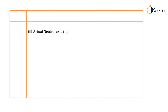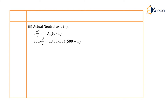Now moving to the third step: actual neutral axis. To calculate the actual neutral axis, we equate the equation b into N squared divided by 2 is equal to M into AST into (d minus N). With b equal to 300 mm, M equal to 13.33, AST equal to 804 mm square, and effective depth 500 mm, we find the value of N equal to 156.6 mm.